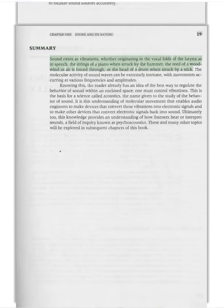Summary. Sound exists as vibrations, whether originating in the vocal folds of the larynx as in speech, the strings of a piano when struck by the hammer, the reed of a woodwind as air is forced through, or the head of a drum when struck by a stick. The molecular activity of sound waves can be extremely intricate, with movements occurring at various frequencies and amplitudes. Knowing this, the reader already has an idea of the best way to regulate the behavior of sound within an enclosed space—one must control vibrations. This is the basis for a science called acoustics, the name given to the study of the behavior of sound. It is this understanding of molecular movement that enables audio engineers to make devices that convert these vibrations into electronic signals and to make other devices that convert electronic signals back into sound. This knowledge provides an understanding of how listeners hear or interpret sounds, a field of inquiry known as psychoacoustics. These and many other topics will be explored in subsequent chapters of this book.